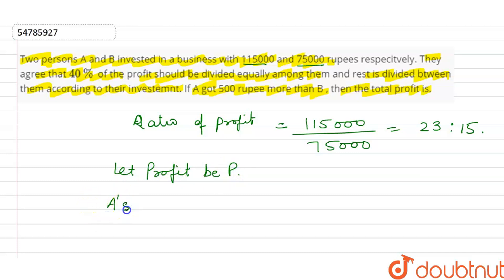So, A's profit - how much profit will it be? 40% of the profit is divided equally between them. And how much more? The rest of the profit, the rest of the value. Okay? We'll talk about 60% of the profit. So, A's profit is 23 by 38 into 60% of the total profit.